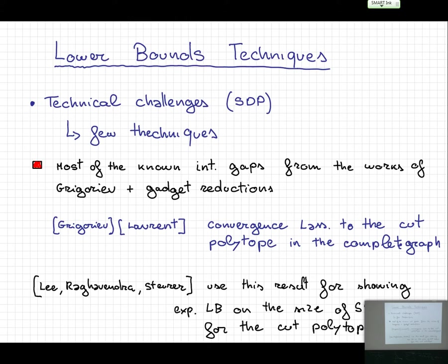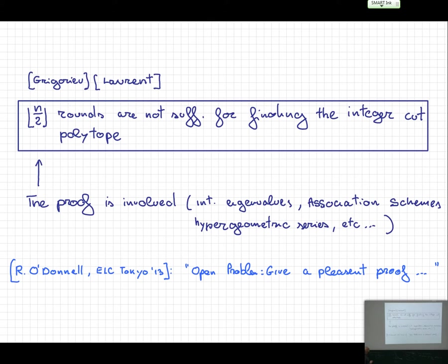The result says that N over 2 rounds are not sufficient for finding the integer cut polytope. The proof is involved and requires nice mathematical tools like association schemes, hypergeometric series, and so on. Rather than reproducing that proof, I present a different proof — not necessarily more pleasant, but different.